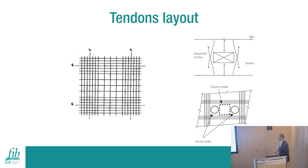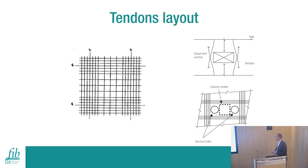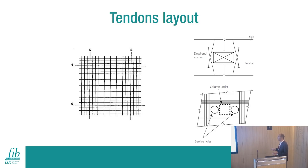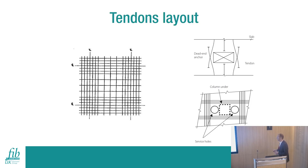The layout of the tendons is usually somewhere between fully distributed and banded distribution, with more tendons in the column strip and fewer in the middle strip. We can accommodate penetrations both in the middle of the slab or next to the column, making sure that tendons are placed in a way that avoids cracks around the penetration. Often, additional reinforcement is provided to prevent the slab from cracking around penetrations.